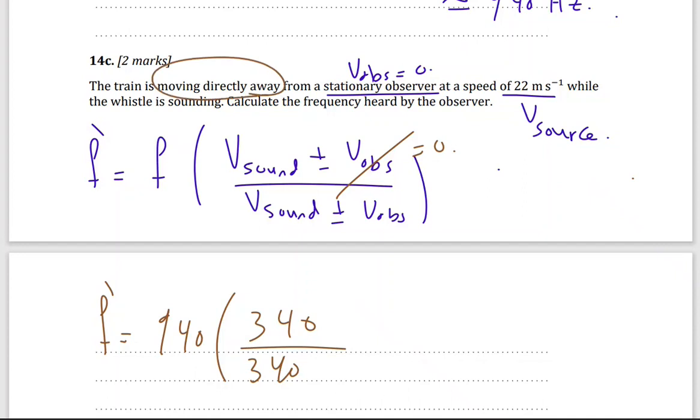Moving away, that means the velocity observed will be less. How I'm going to make the frequency less, the sound will be less, the pitch of the sound will be less, by increasing the denominator, because they're directly proportional. Increasing, it means I'm going to use positive sign. So plus 22. And you will get 880 hertz, 880 hertz.